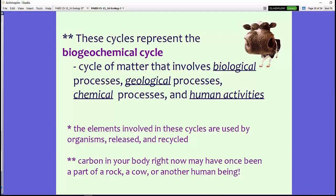These three cycles, and of course there's others, they represent what's called the biogeochemical cycle. This is a cycle of matter that involves biological processes, geological processes, chemical processes, and human activities. The elements involved in these cycles are used by organisms, released by the organisms, and recycled as well. The carbon that's in your body right now may once have been part of a rock, could have been part of a cow, or maybe another human being. It truly is a matter of recycling through everything in the atmosphere and the ecosystem.